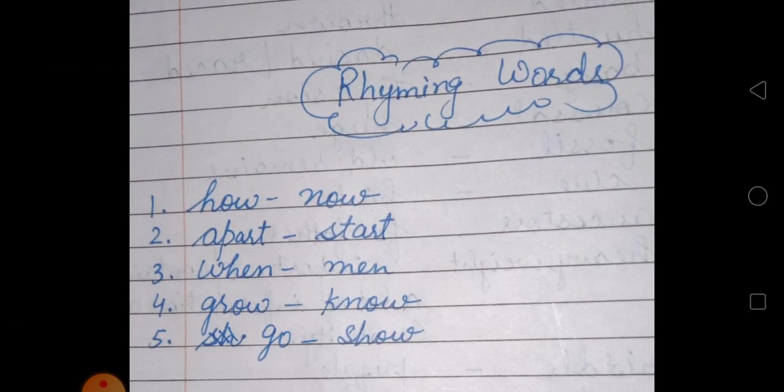To hume is poem mein se rhyming words dekhne hai. Let's start: how — now. Dekhao, sound same aa rahi hai na. Spelling same nahi hoti, only sound same hoti hai. Apart — start. When — men. Grow — no — go — show. These are the rhyming words.